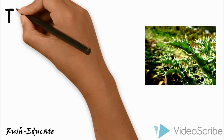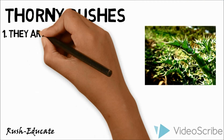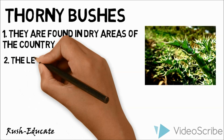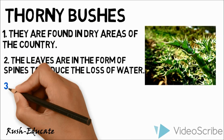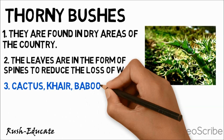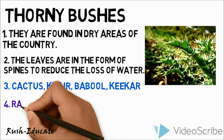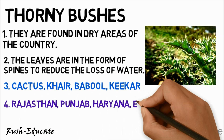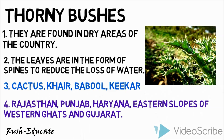Thorny bushes are found in dry areas of the country. The leaves are in the form of spines to reduce the loss of water. Cactus, Khair, Babul, and Kekar are important plants, found in the states of Rajasthan, Punjab, Haryana, eastern slopes of Western Ghats, and Gujarat.